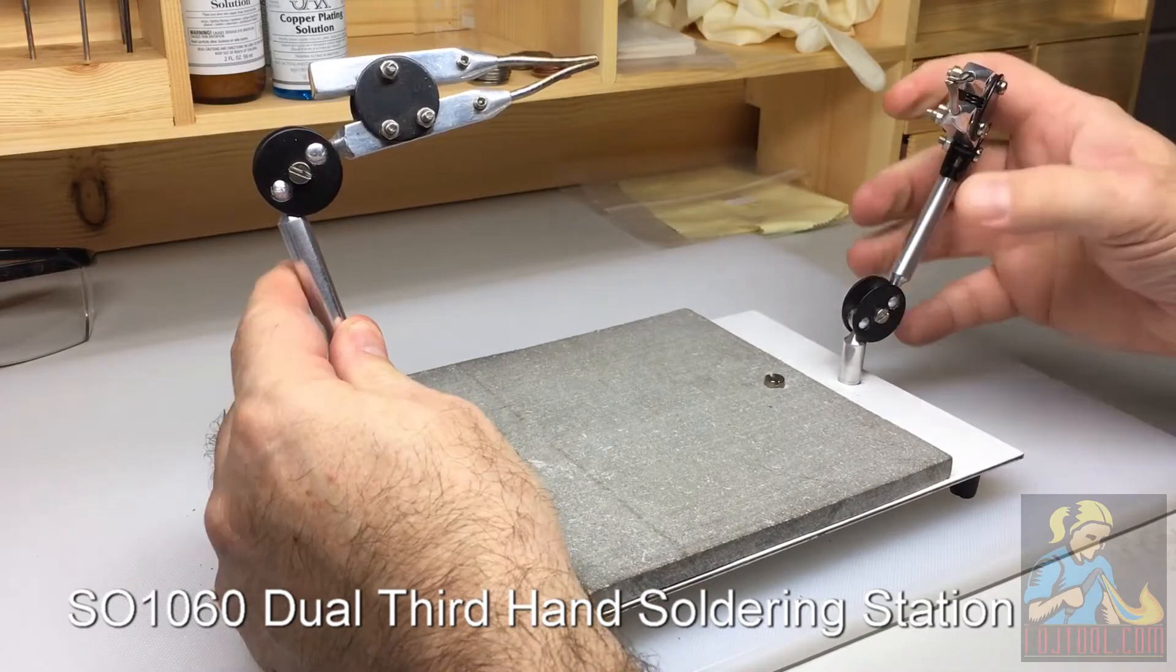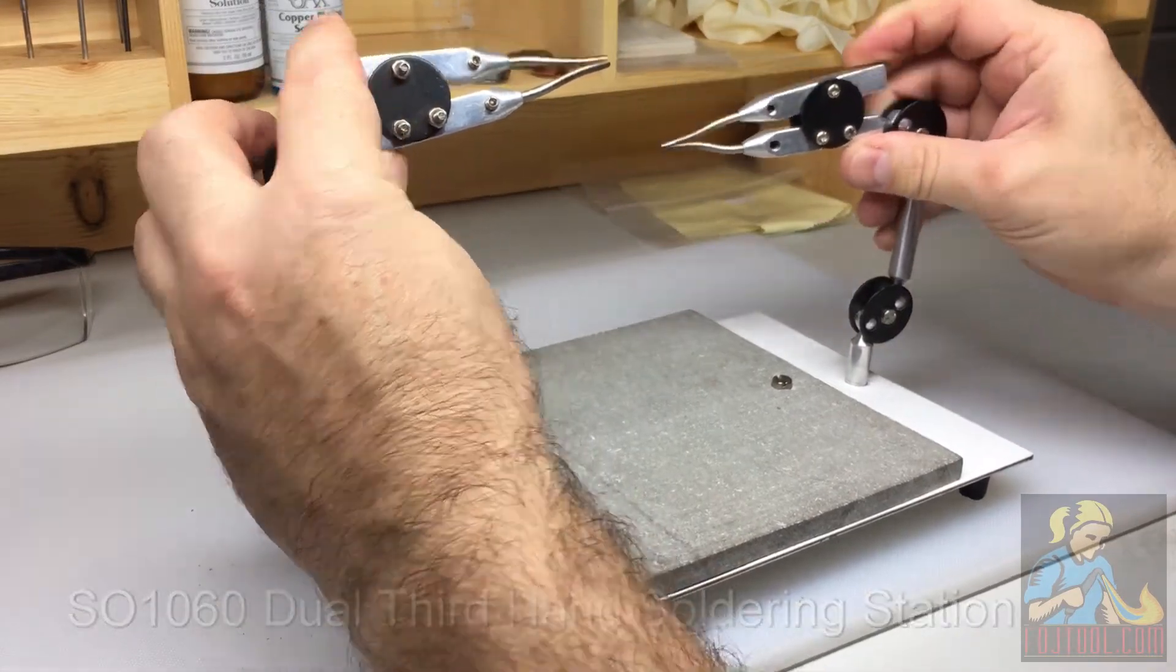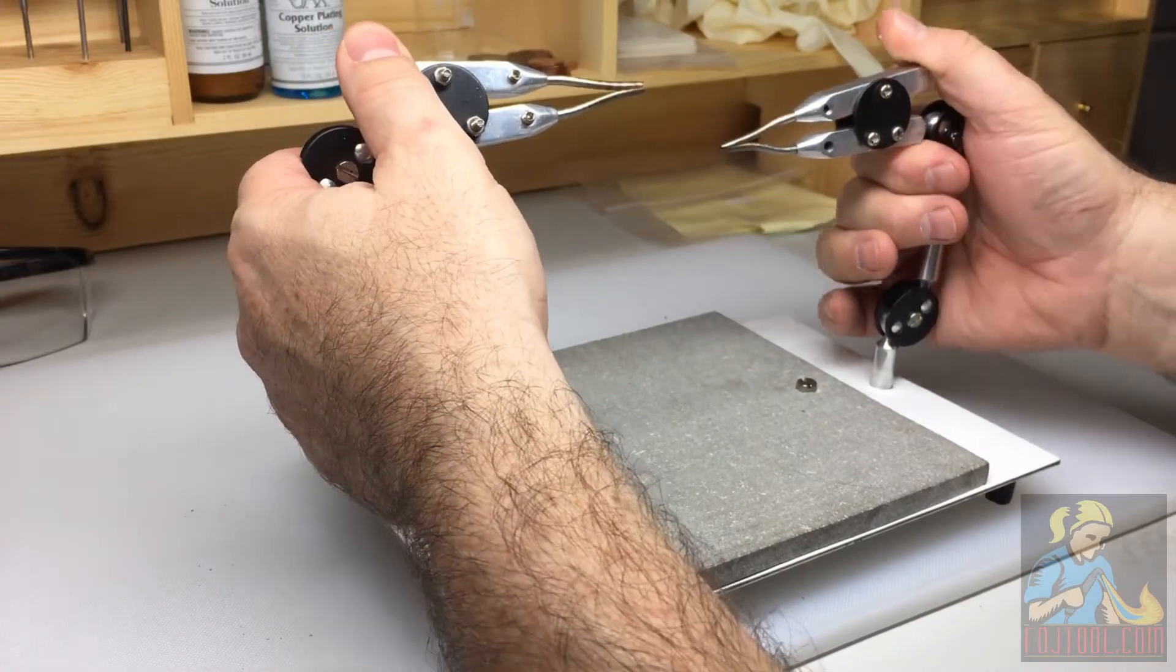You get two fully articulated arms. At the end of each is a spring-loaded jaw that's really useful in holding things.